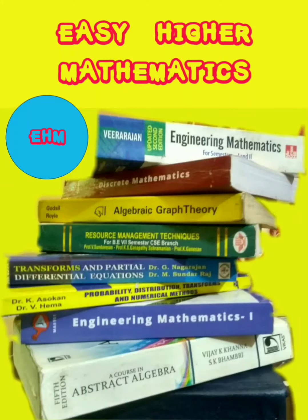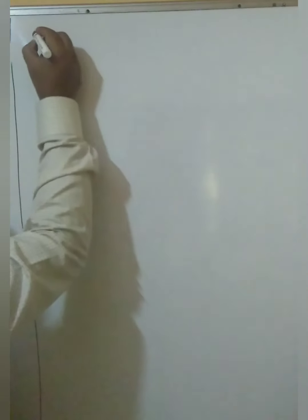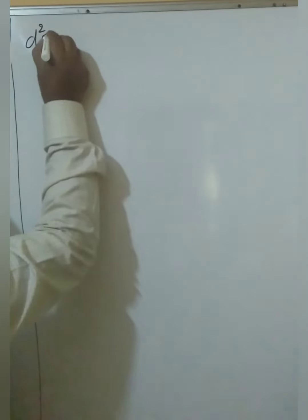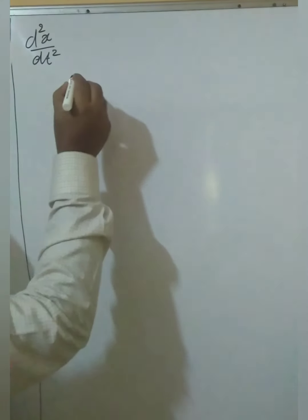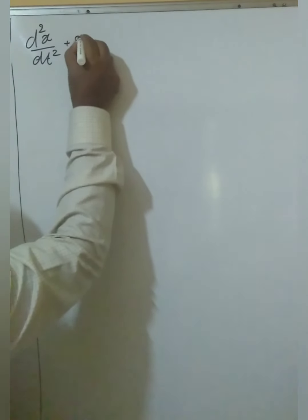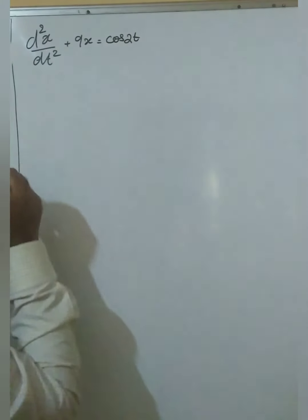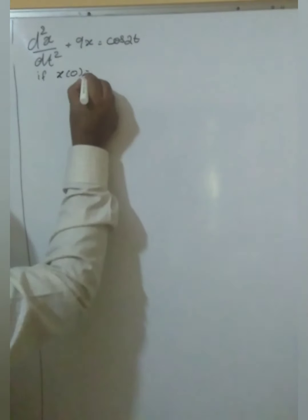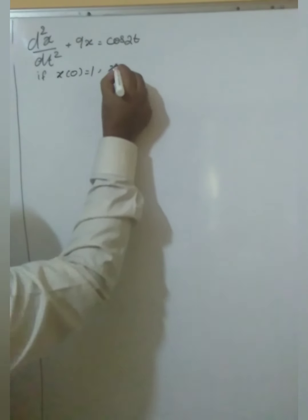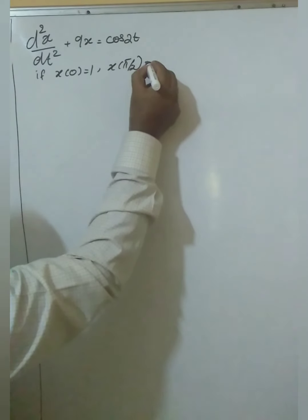Welcome to Easy Higher Max. The next problem: d²x/dt² plus 9x equals cos t. If x(0) equals 1, then x(π/2) equals minus 1.